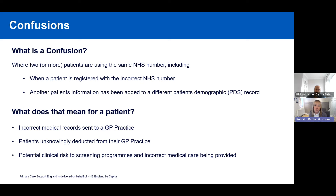When the wrong NHS number is used to register a patient, the movement of medical records is tied to that NHS number, meaning the practice would receive the wrong medical record. The correct patient would also be unknowingly deducted from the practice they expect to be registered with. In primary care, you may encounter situations where a patient presents to arrange an appointment and is told they're no longer registered, but they haven't registered anywhere else — this could be indicative of a confusion. There is also an essential clinical risk to screening programs, as invite or result letters may go to the wrong patient's address.